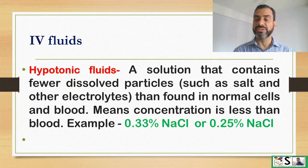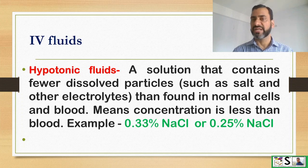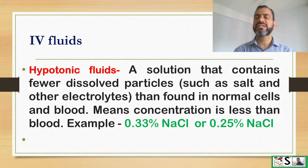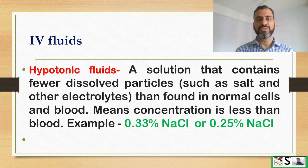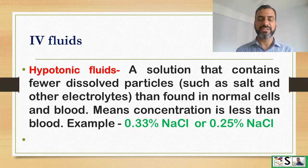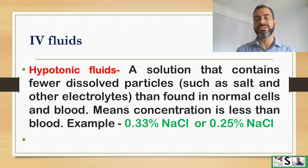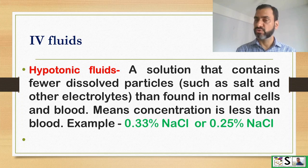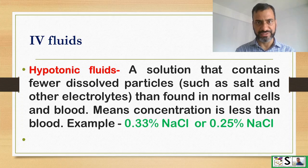Hypotonic fluid is the solution that contains fewer dissolved particles such as salt and electrolytes than found in the normal cells or blood, meaning their concentration is less than blood. Examples are 0.33% saline and 0.25% saline or sodium chloride.